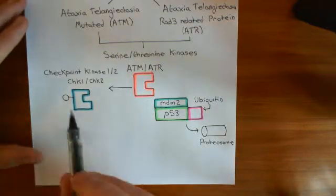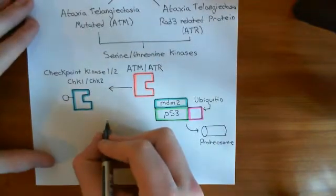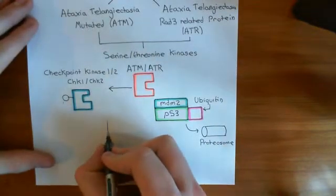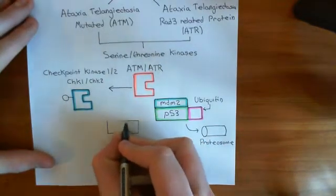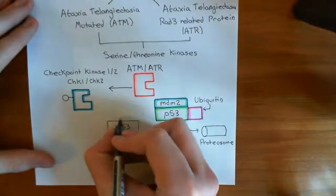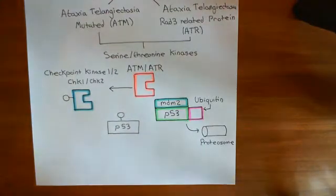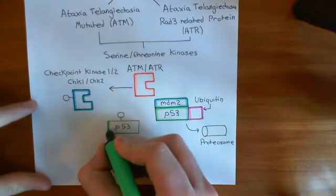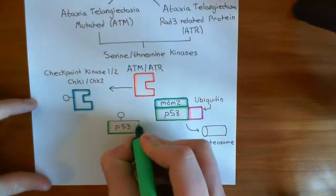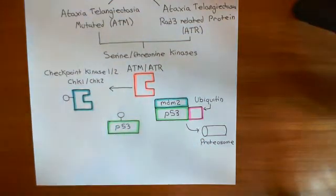The way CHK1 and CHK2 stop this destruction process is: when P53 is made they phosphorylate it, adding a phosphate group onto it. Once a phosphate group is on P53, MDM2 cannot bind to it. So the P53 gets to survive because MDM2 can't bind to it with the phosphate group present.